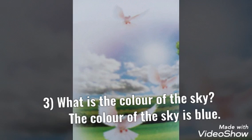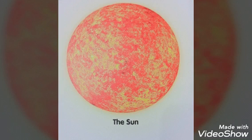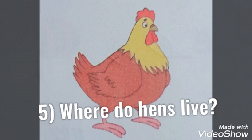Third question: What is the color of the sky? The color of the sky is blue. Once again, what is the color of the sky? The color of the sky is blue. Then fourth question: When does the sun shine? The sun shines in the day. When does the sun shine? The sun shines in the day.